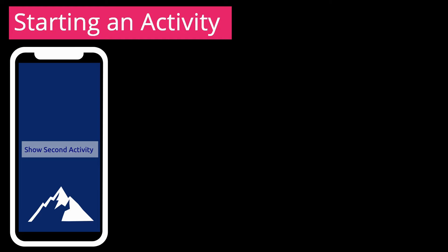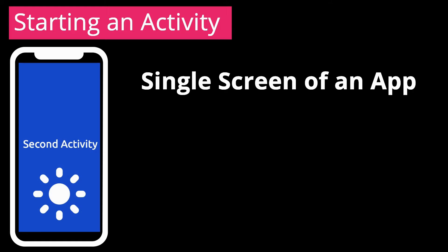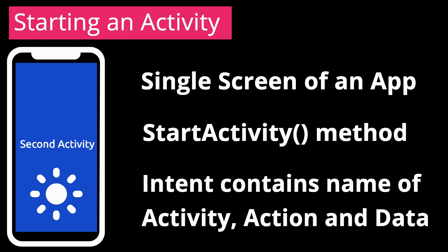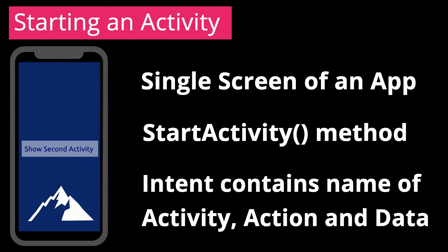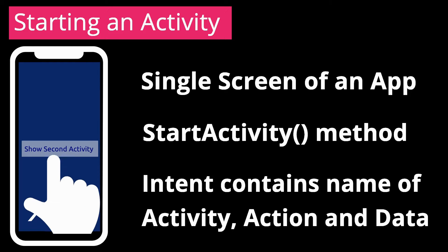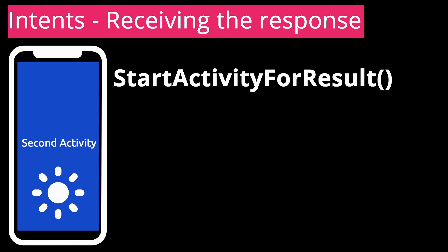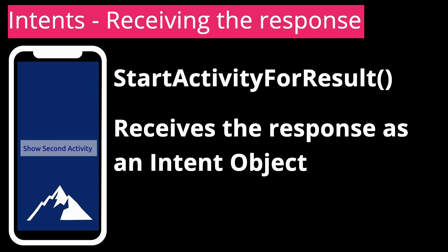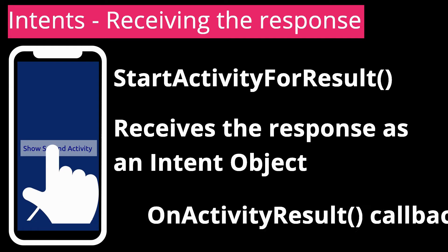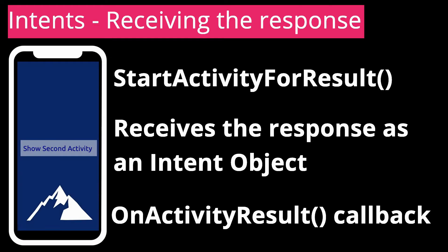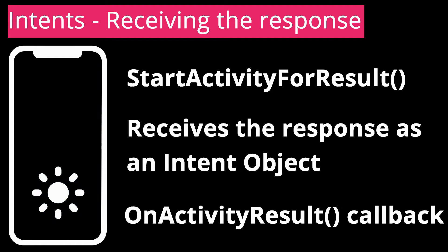An activity represents a single screen in an app. You can start a new instance of an activity by passing an intent to the startActivity method. The intent describes the activity to start and carries any necessary data to be transmitted to the opened activity. If you want to receive a result from the activity when it finishes, you can use the startActivityForResult method. Your activity receives the result as a separate intent object in your activity's own onActivityResult callback method. For more information about activity, see the lecture related to activities.